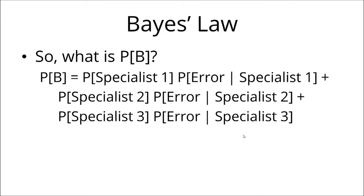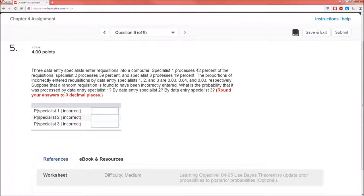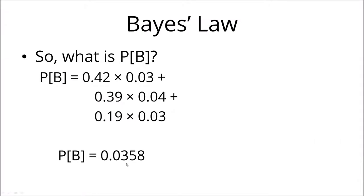So probability of B is just the probability of specialist one making the mistake — specialist one and an error — plus the probability that specialist two makes the error, plus the probability that specialist three makes the error. All we have to do is substitute. Probability of specialist one is 42%, probability of specialist two is 39%, probability of specialist three is 19%. We're also given the conditional probability of errors given the individual specialists: P(error | specialist 1) = 3%, P(error | specialist 2) = 4%, P(error | specialist 3) = 3%. The 42, 39, and 19 are given in the second sentence; the 3%, 4%, 3% are given in the third sentence.